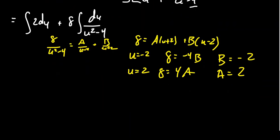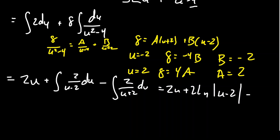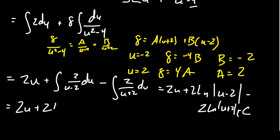With those values, the antiderivative of 2 is 2u. The second piece becomes the integral of 2/(u−2) du minus the integral of 2/(u+2) du, giving 2 ln|u−2| − 2 ln|u+2|. Since both logarithms share a coefficient of 2, we can combine them: the result is 2u + 2 ln|( u−2)/(u+2)| + C.